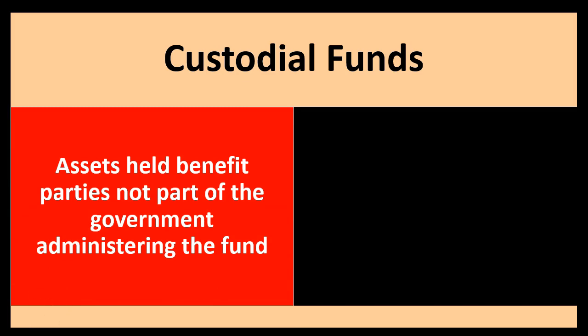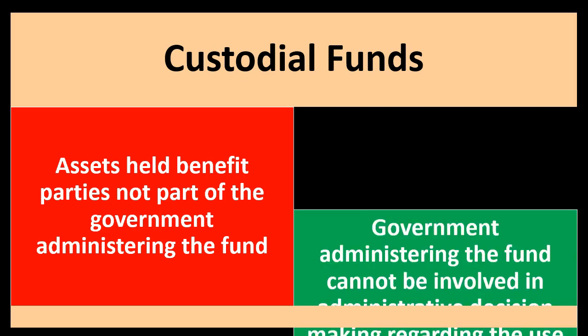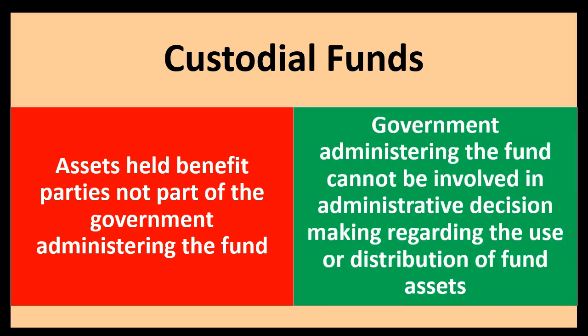Custodial fund assets are held to benefit parties not part of the government administrating the fund. The assets within the custodial fund do not benefit the government that is administrating the fund. This is one of the key conditions that makes it a fiduciary type of fund — the government is administering the assets, but those assets aren't for the benefit of that governmental unit.